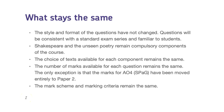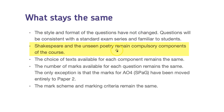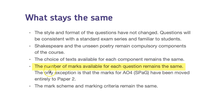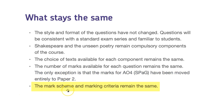AQA has given a checklist of the things that are going to stay the same. The style and format of the questions haven't changed, so you can still do past paper questions as your revision. Shakespeare and the unseen poetry are compulsory. The choice of texts available for each component remains the same. The number of marks for each question is exactly the same as before — the only thing that changed was where the spelling, punctuation and grammar marks sit, which are now on Paper 2. And the mark scheme is going to be the same, so you'll be judged in the same way as students in the past and in your Year 10 mocks.